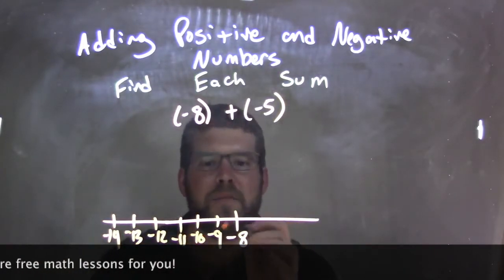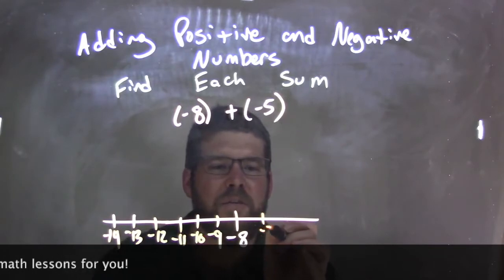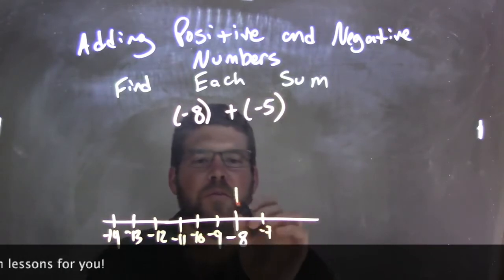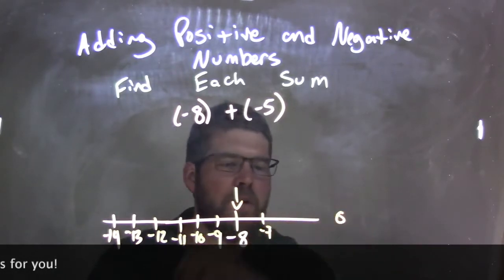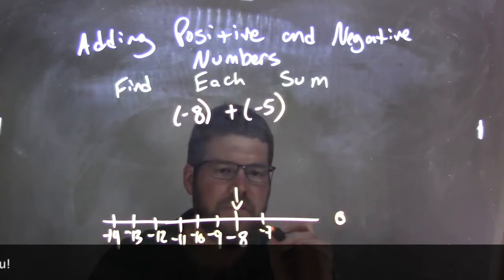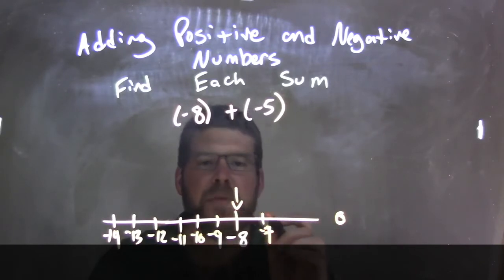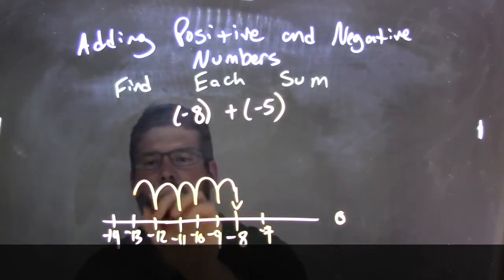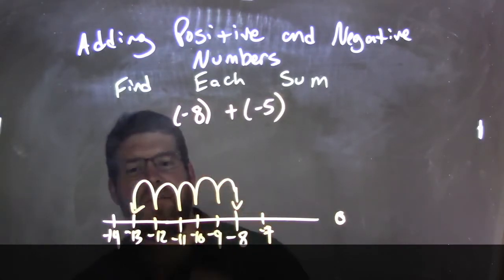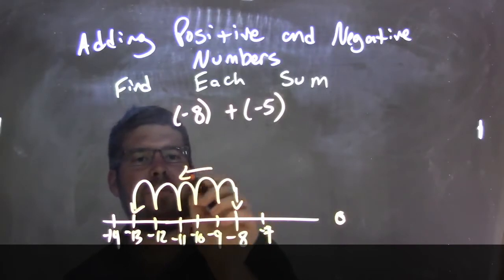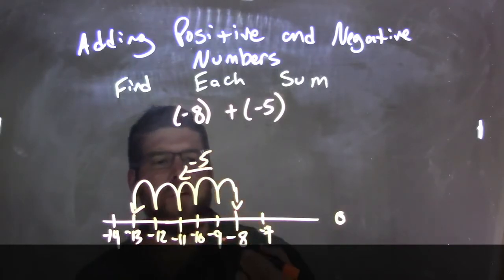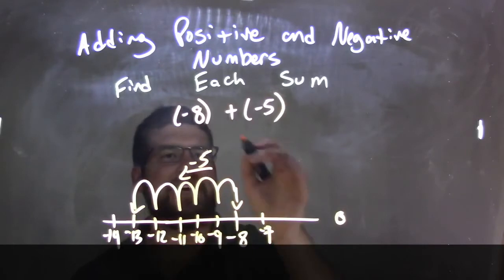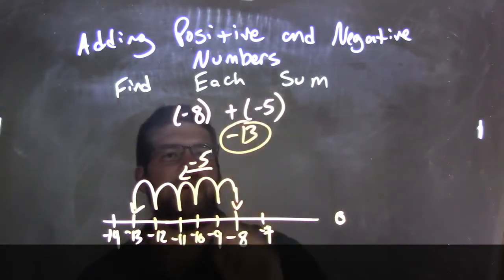We start with negative 8 and need to add 5 units. Zero is somewhere over here, but we don't need that right now. We start with negative 8 and move to the left 5 units: 1, 2, 3, 4, 5. Negative 13. So negative 8 plus negative 5 is negative 13. That's my final answer.